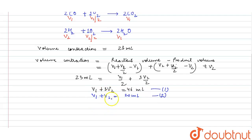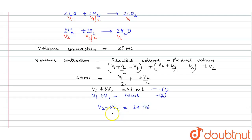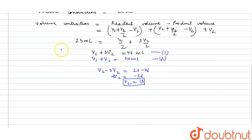Subtracting equation 2 from equation 1: (V1 + 3V2) - (V1 + V2) = 46 - 20, giving 2V2 = 26, so V2 = 13. Putting V2 = 13 into equation 2: V1 + 13 = 20.